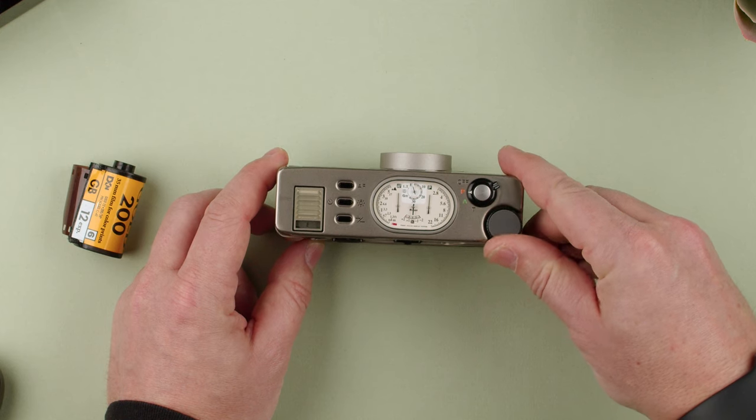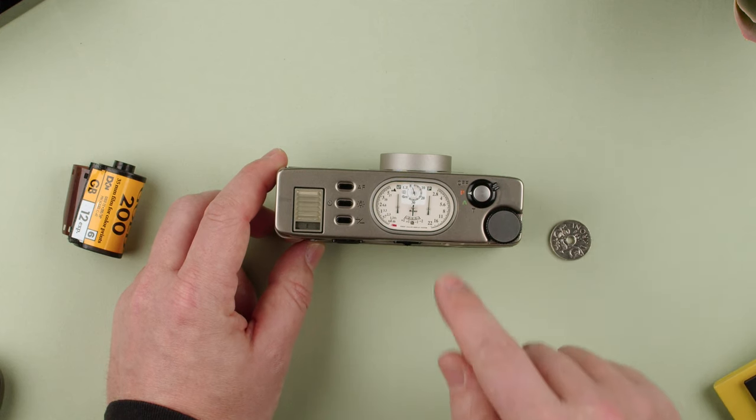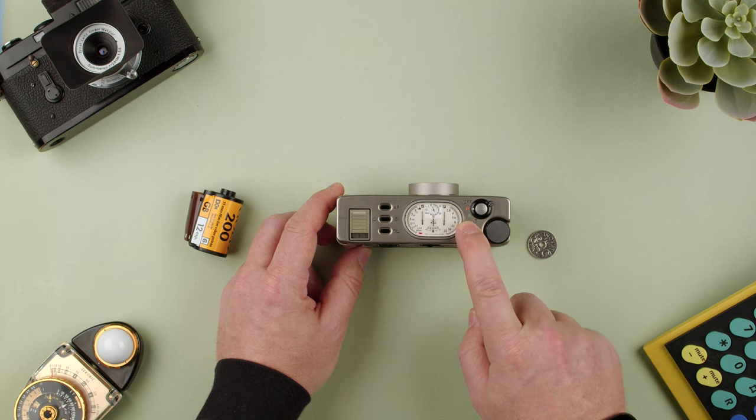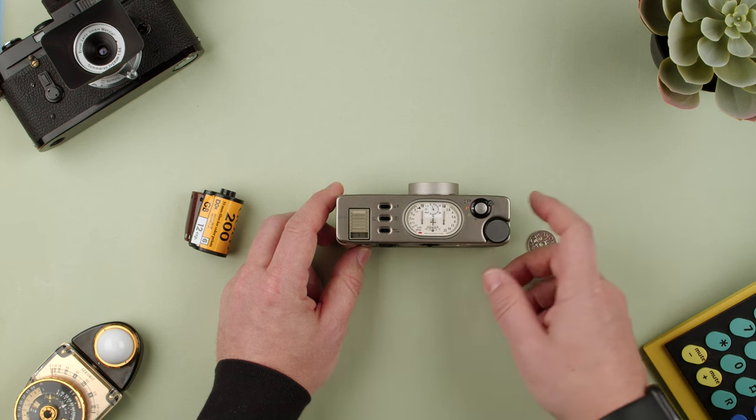That's all there is in the on-off switch. This is to navigate the functions. P is program, A is aperture priority, and T is time for long exposures.